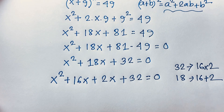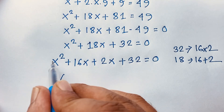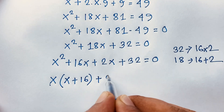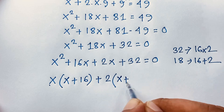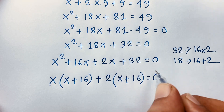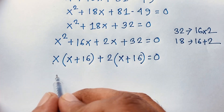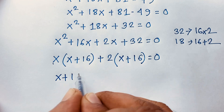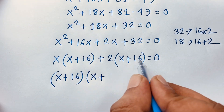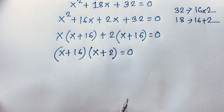16x plus 2x is 18x, so that checks out. Now x is common in the first two terms: x times (x plus 16), and then 2 is common in the last two terms: 2 times (x plus 16), equals zero. So we get (x plus 16)(x plus 2) equals zero.